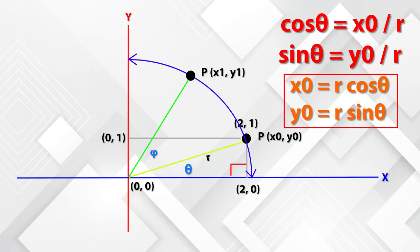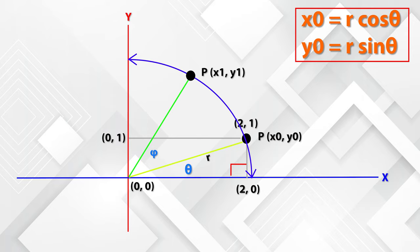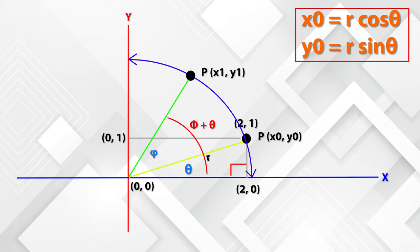After rotation, the new sub-angle is phi and the coordinates are x1, y1. The total angle from the x-axis will be phi plus theta. Similar way, if we try to evaluate x1 and y1 values, then it will be x1 is equal to R cos of theta plus phi and y1 is equal to R sin of theta plus phi.